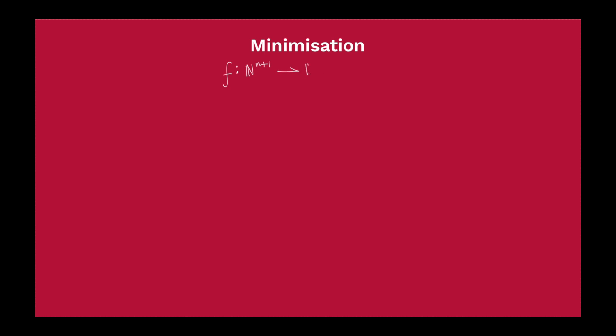Minimization deals with a function f which is going to take n+1 inputs and give us a single output in return. The minimization with n parameters of f is going to be a function that takes n inputs and gives us 1 output. To define minimization, let's consider inputs to f of the form α₁ up to αₙ and x — that is, we're fixing these n inputs and then varying this final one.